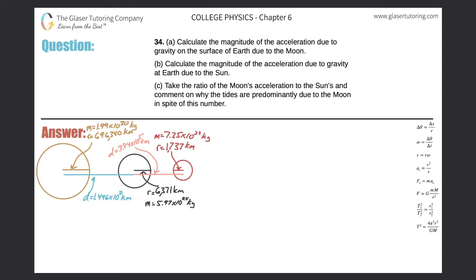Number 34, letter A. Calculate the magnitude of the acceleration due to gravity on the surface of the Earth due to the Moon. So here we have a couple of pictures. Here's the Sun in gold, the Earth in black, and the Moon is in red.